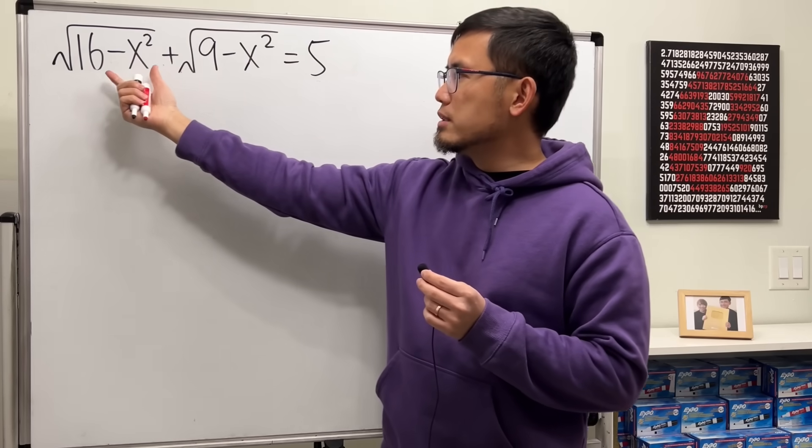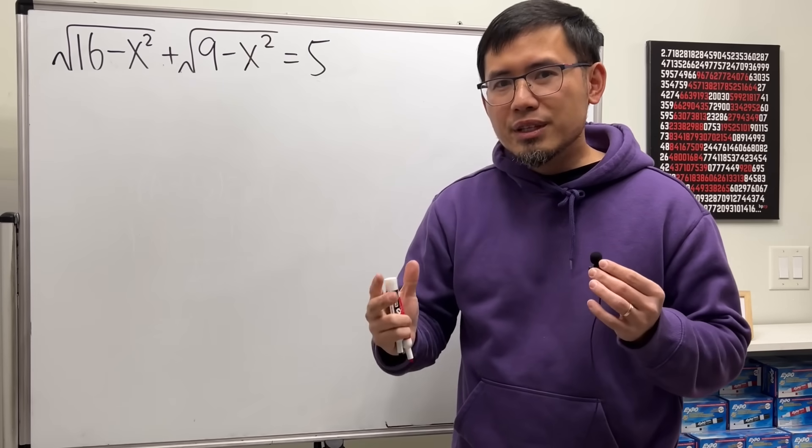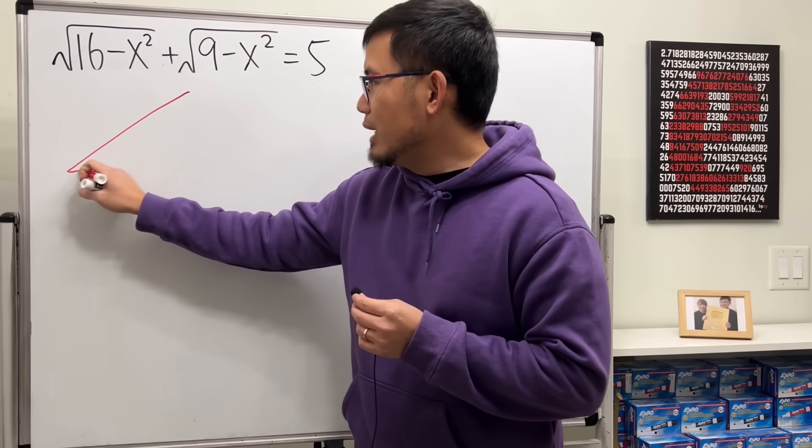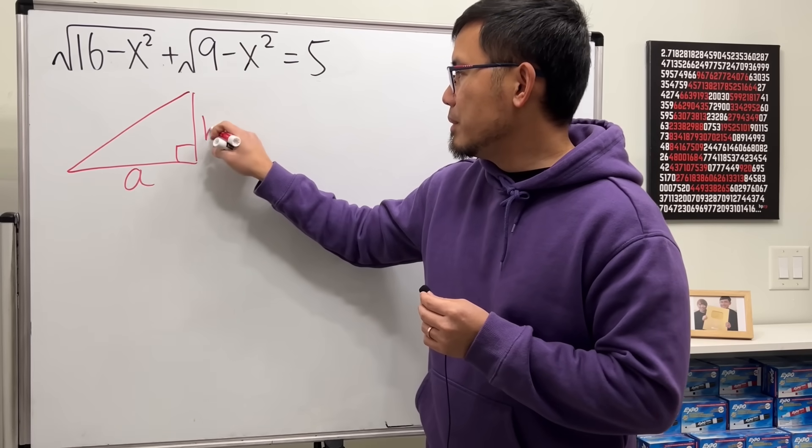When we have a difference of 2 squares instead of a square root, we can actually construct right triangle. Let me show you how. First, if we have a right triangle right here, let's call this a, b, and c.